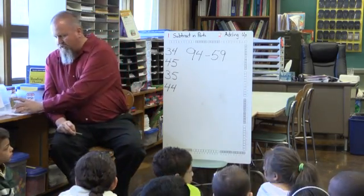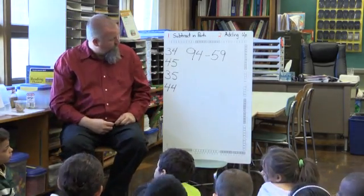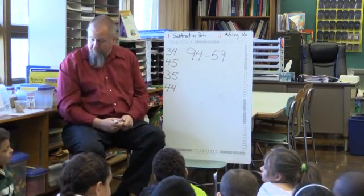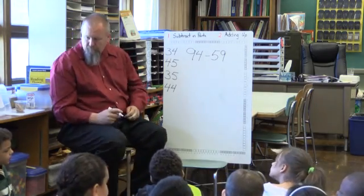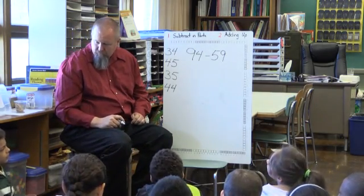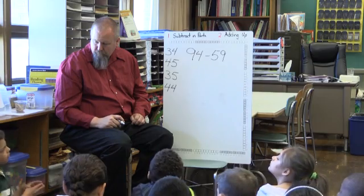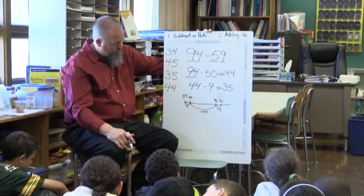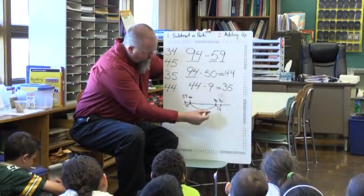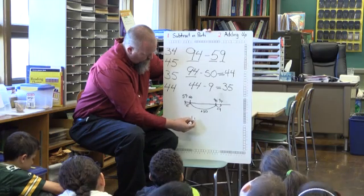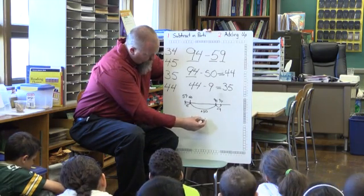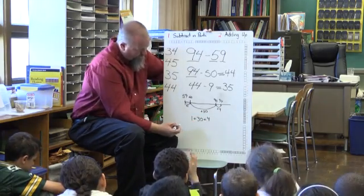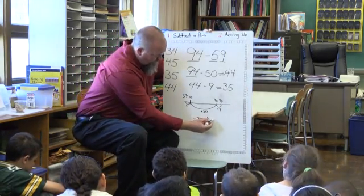Michael Reams, which answer did you come up with? 35. Can you tell us how you got 35? I subtracted in parts and added my jumps: 1 plus 30 plus 4, and that equals 35.